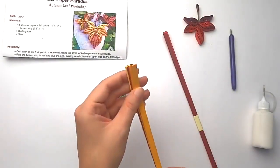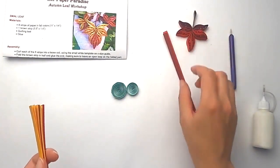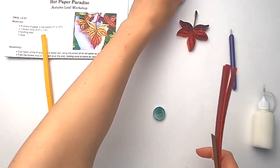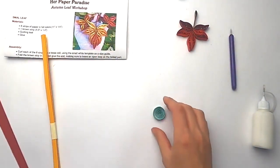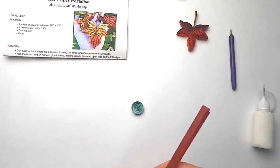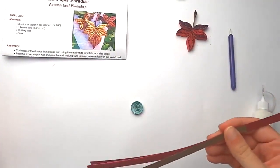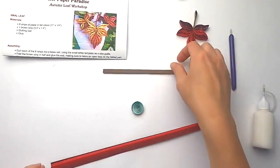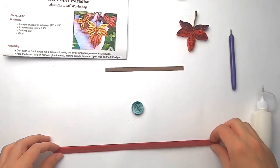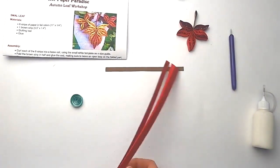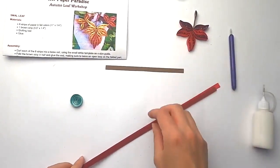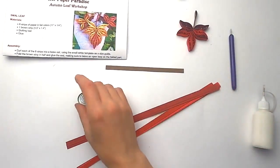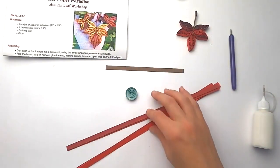We are going to start with a smaller leaf and for that you need the smaller pack of strips and the smaller template in your kit. Go ahead and slide strips out of its binding piece. Set the brown one aside for later. And we're just going to start curling the strips into loose coils.